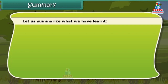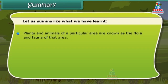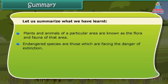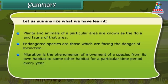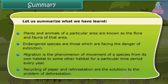Let us summarize what we have learned. Plants and animals of a particular area are known as the flora and fauna of that area. Endangered species are those which are facing the danger of extinction. Migration is the phenomenon of movement of a species from its own habitat to some other habitat for a particular time period every year. Recycling of paper and reforestation are the solutions to the problem of deforestation.